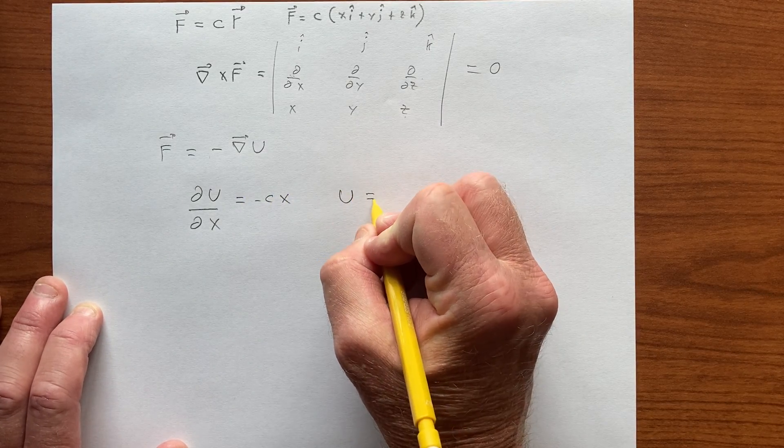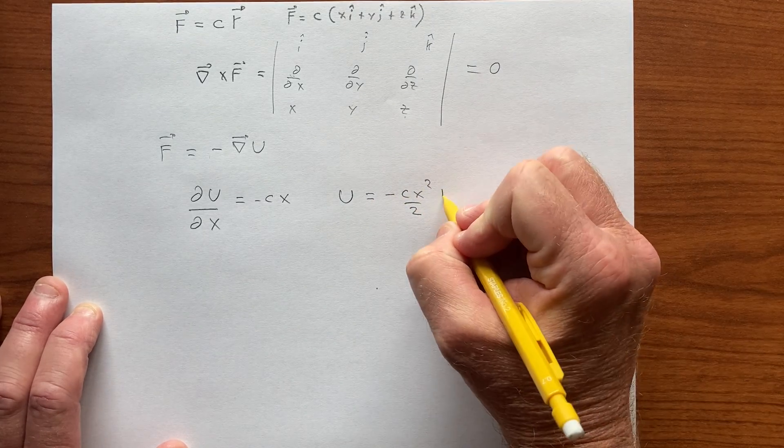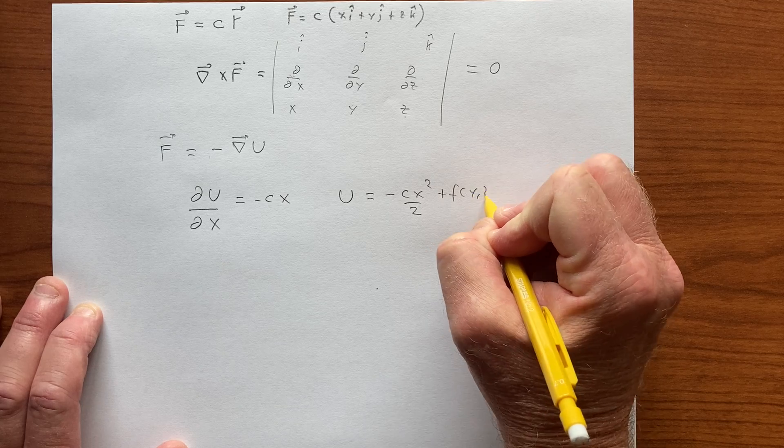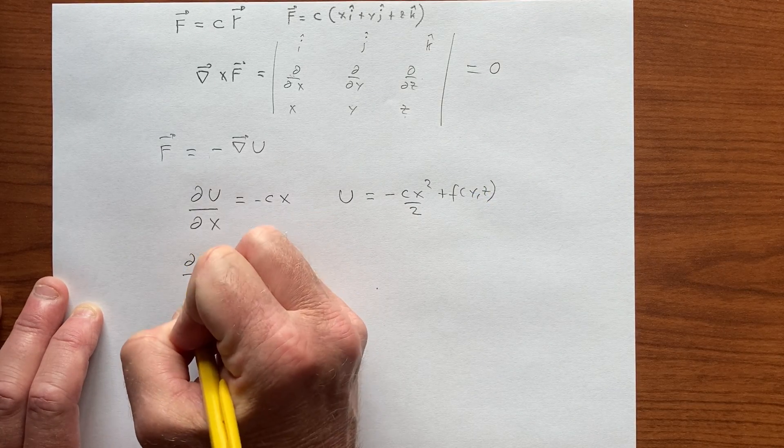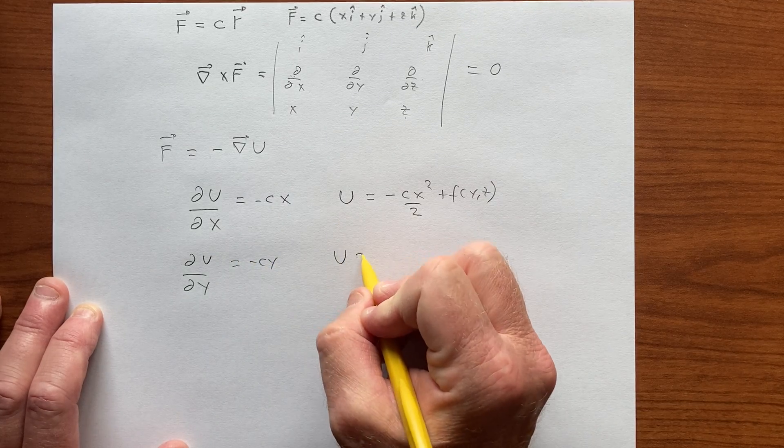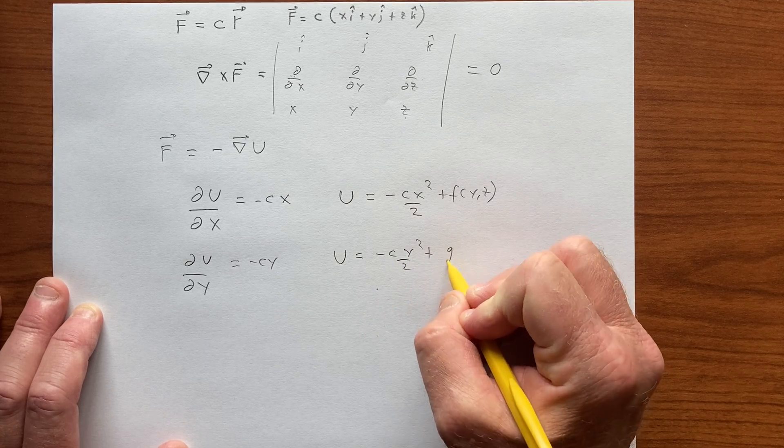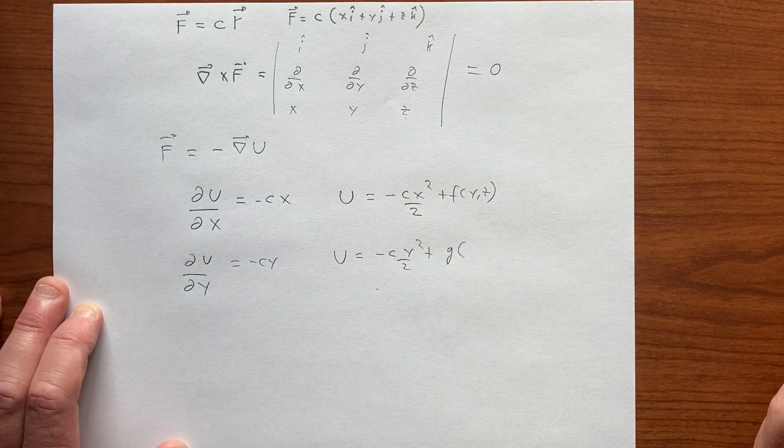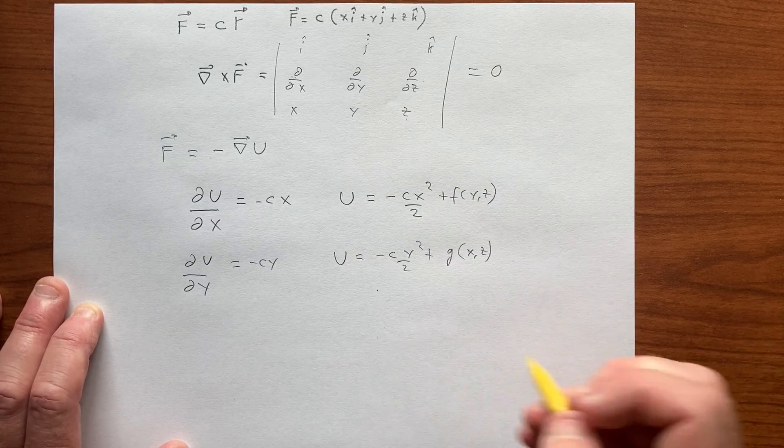And so this U function, when we integrate, looks like this, plus some function of Y and Z. So if we do the integral in Y, then we'll get minus CY squared over 2, plus some function G of X and Z, up to a function G of X and Z.